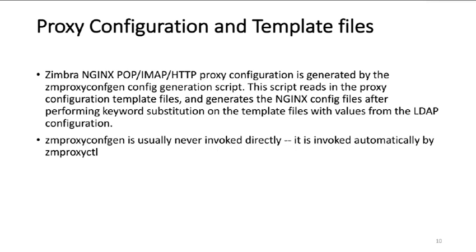The Zimbra Nginx configuration for POP, IMAP, or HTTP proxy is generated by the ZMProxyConstant config generation script. This script reads proxy configuration template files and generates Nginx config files after performing keyword substitution with values from the LDAP configuration. To simplify configuration, the Nginx config files have been split based on functionality. ZMProxyConstant is usually never invoked directly — it is invoked automatically by ZMProxyCTL whenever you restart your proxy servers.